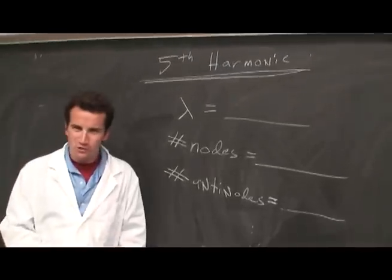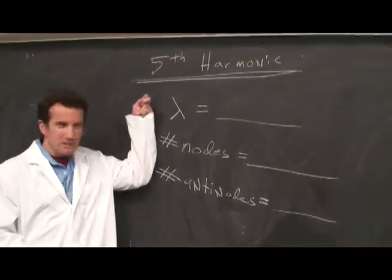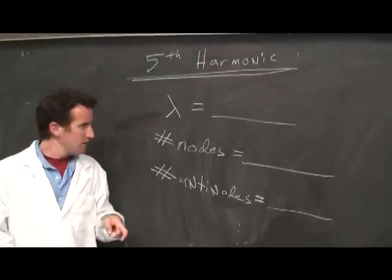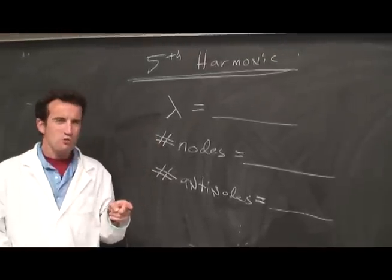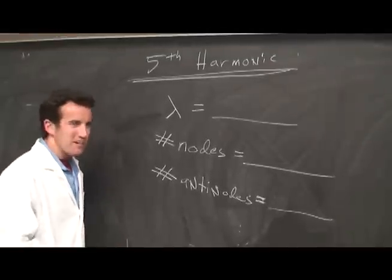Now it's time for a test of what you've learned. For the fifth harmonic, what would the wavelength be? How many nodes would be present? And how many antinodes?